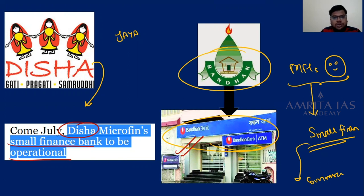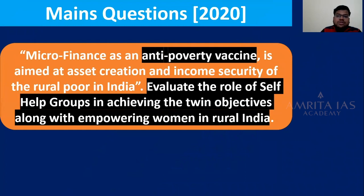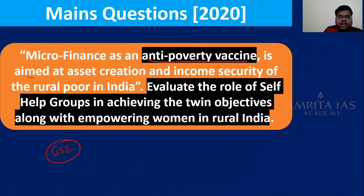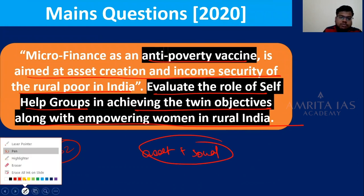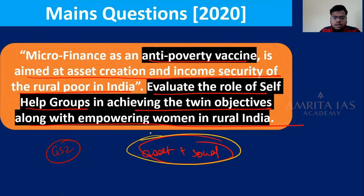In 2020, a GS2 question was asked: 'Microfinance is an anti-poverty vaccine aimed at asset creation and income security of the rural poor in India. Evaluate the role of self-help groups in achieving the twin objectives along with empowering women in rural India.' Asset creation and income security are concepts from the Economic Survey. This is a common expected question in GS2, and you can use content from the Economic Survey in your answer.